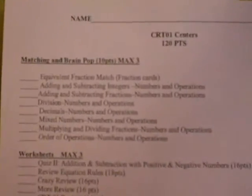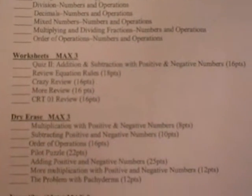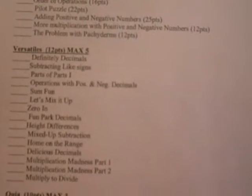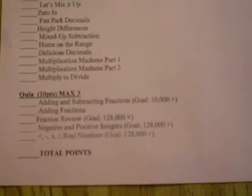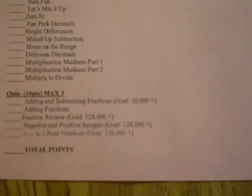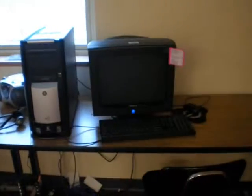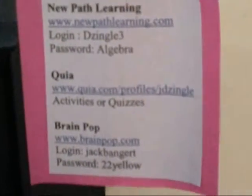There are different categories such as Dry Erase, Worksheets, Versatiles, BrainPop, NewPath Learning, and Quia. BrainPop, NewPath Learning, and Quia are all activities to complete on a computer. When you get to the computer you will find a pink sign with all the websites, logins, and passwords.